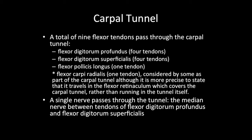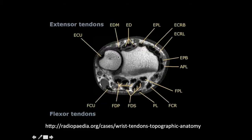The flexor carpi radialis can be considered part of the carpal tunnel, although it is more precise to say that it travels in the flexor retinaculum which covers the carpal tunnel, rather than running in the tunnel itself. The nerve within the carpal tunnel is the median nerve, and it passes between the tendons of the flexor digitorum profundus and flexor digitorum superficialis. Along the volar aspect from lateral to medial, we'll see the flexor carpi radialis, the flexor pollicis longus, the flexor digitorum superficialis, the flexor digitorum profundus, and along the ulnar margin the flexor carpi ulnaris.